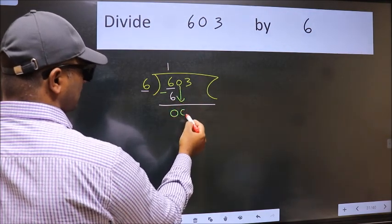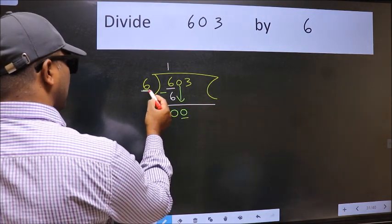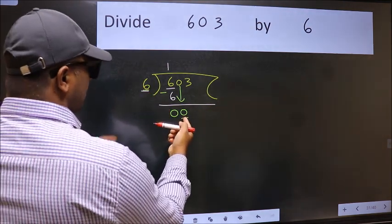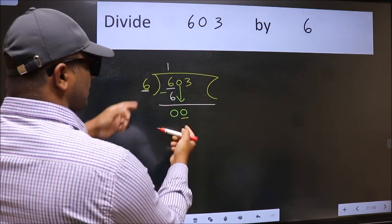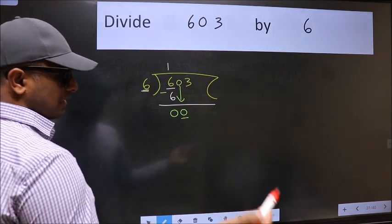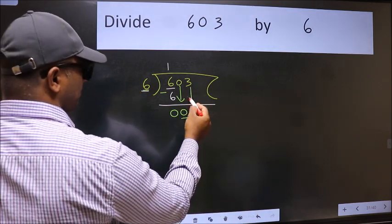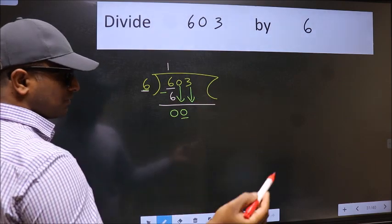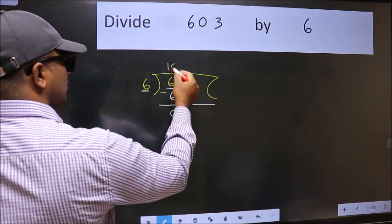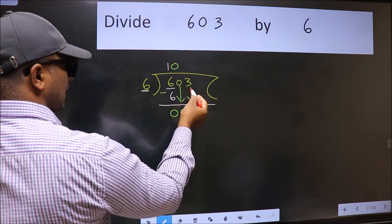So zero down. Now here we have zero and here 6. Zero is smaller than 6, so we should bring down the second number. And the rule to bring down the second number is put zero here, then only we can bring this number down.